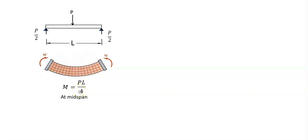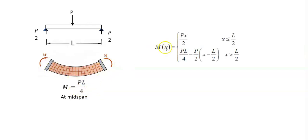We can also calculate the moment along the axis of the beam from this relation. Moment starts from 0 at this end, increases up to its maximum in the middle, and decreases to 0 on the other end of the beam.